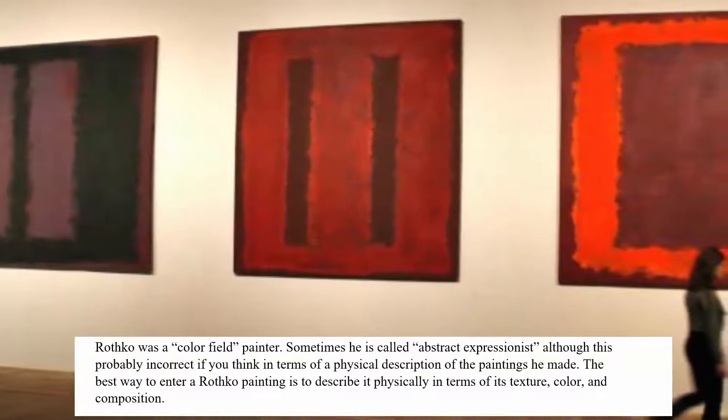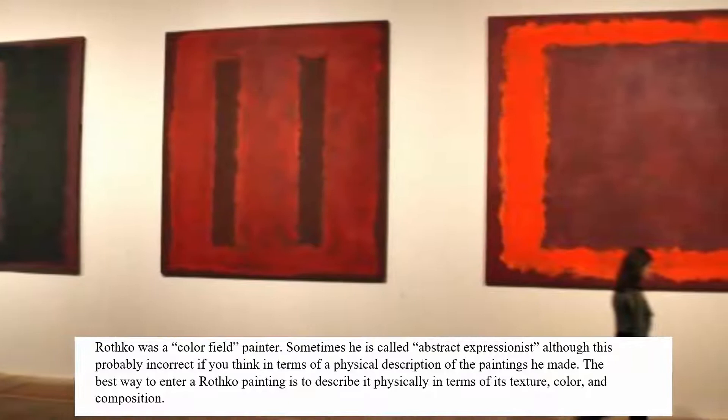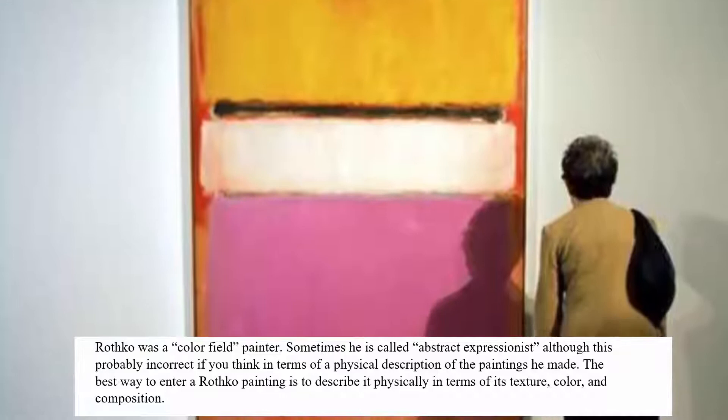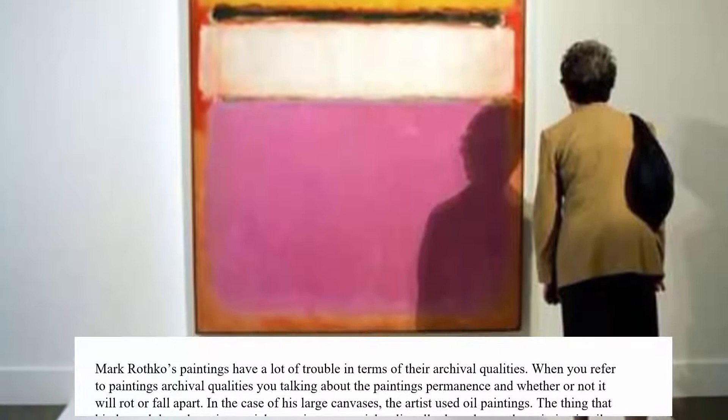Mark Rothko was a color field painter, and he was sometimes called an abstract expressionist. But I think this is slightly incorrect if you think about the painting in terms of a physical description. The best way to look at a Rothko painting is to describe it in terms of its texture, color, and composition, and that'll give you an entryway.